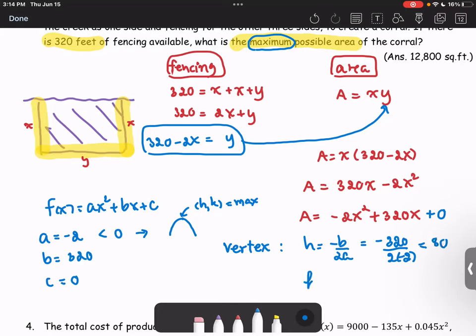And then calculate k, which is the function of h, or the area that we are looking for. Then we get negative 2 multiplied by 80 squared plus 320 times 80. And we will get 12,800 square feet.